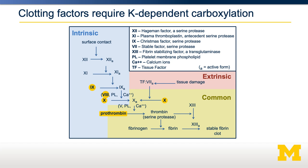This carboxylation is essential for biological function. If you do not have the gamma-dependent carboxylation, which requires vitamin K, then Factor 9, 8, 10, and prothrombin are inactive. This is why people who are deficient in vitamin K are at high risk of bleeding, because they are unable to form stable fibrin clots.